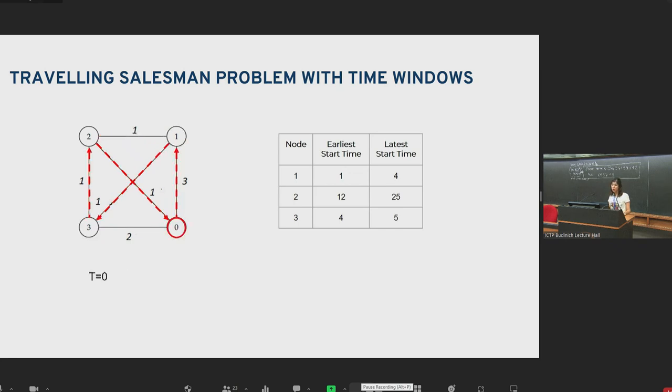Now let's check another route. This has cost six. We will start from zero, one, three, two. At T equals zero, we are again at zero. At T equals three, we are at node one. Let's check the time window. Now we go to node three. It's T equals four. And this is still okay.